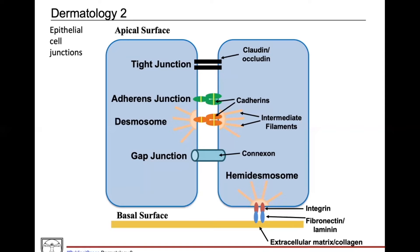Gap junctions are made of connexin and create a channel that allows electrical and chemical communication between cells. Lastly, hemidesmosomes are found at the basal surface of the cell and are important in connecting keratin in the basal cells to the underlying basement membrane. Autoantibodies in Bullous pemphigoid attack hemidesmosomes, causing loss of adherence from the cells to the basement membrane. Integrin — also present here — is a membrane protein important in maintaining integrity of the basal-lateral membrane by binding collagen, laminin, and fibronectin in the basement membrane.